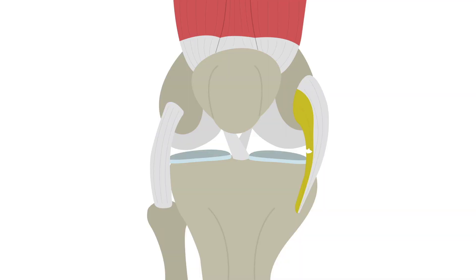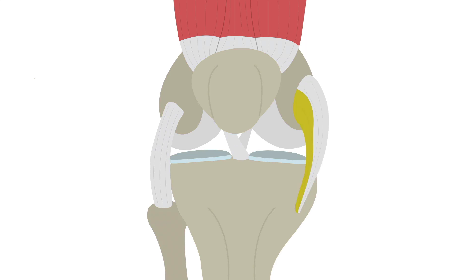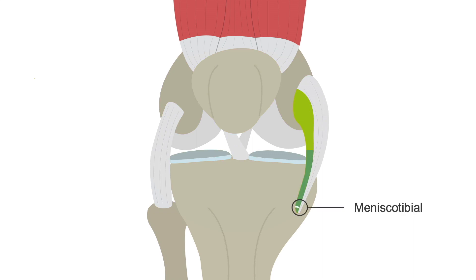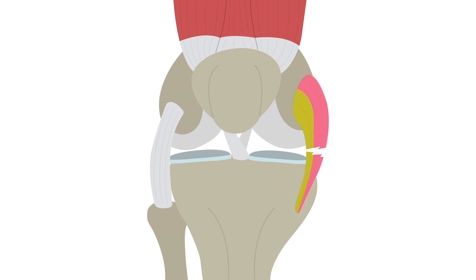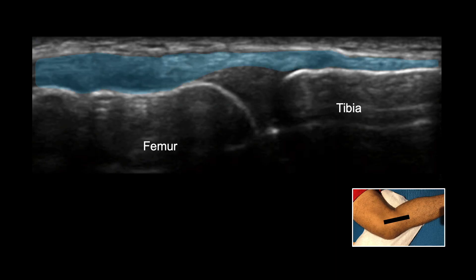MCL partial tears or grade 2 sprains can be localized to either the deeper or the superficial layer. When the deeper layer is involved, we can further localize it to either the menisco-femoral portion or the menisco-tibial portion. In full-thickness tears, both the superficial and deeper layers are torn with adjacent effusion and/or hemorrhage. Here is an example of an MCL tear on ultrasound — a longitudinal view showing a grade 2 sprain or partial tear, with the fibers of the menisco-femoral portion of the deep layer involved.